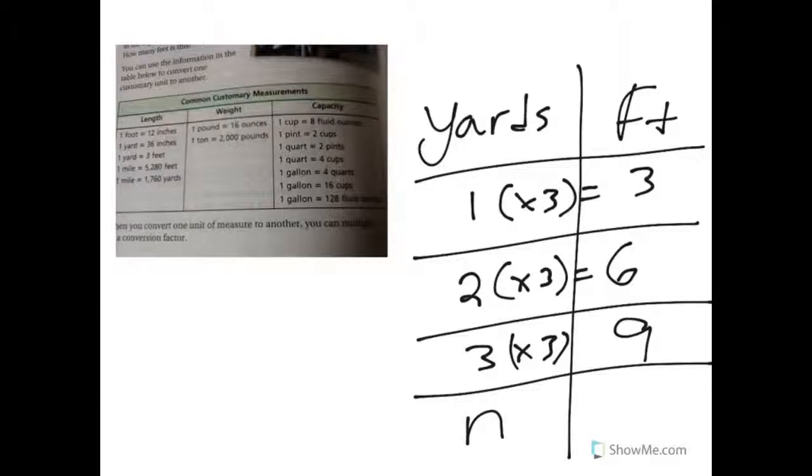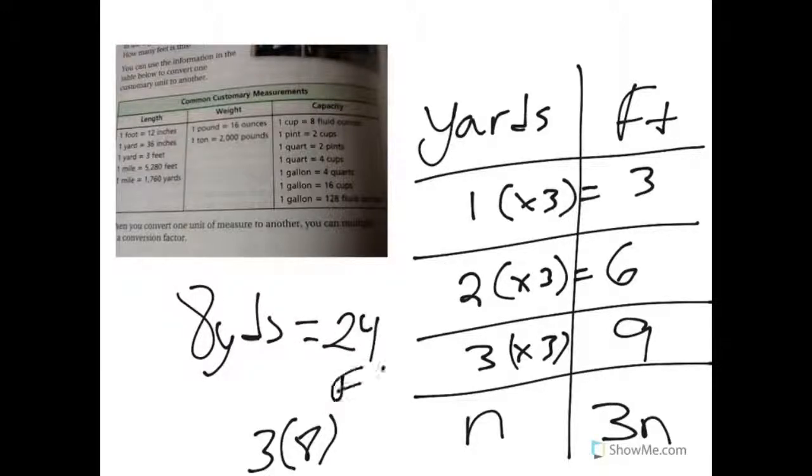So if this is my number n, I know that over here it's going to be 3 times n. So any number I gave you—if I said how many feet are in 8 yards—well, if I have 3n and n equals 8, I know that's gonna be 24 feet.